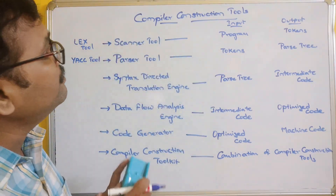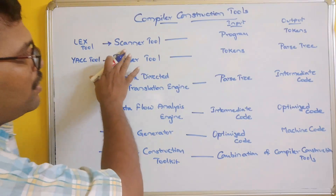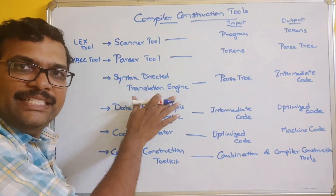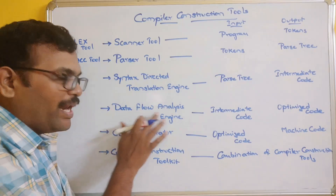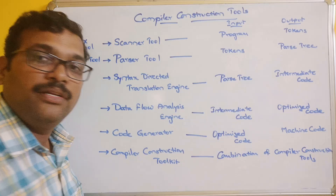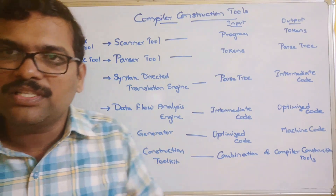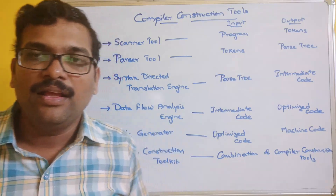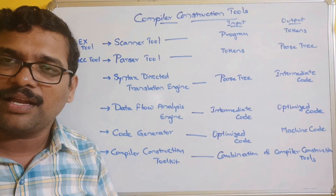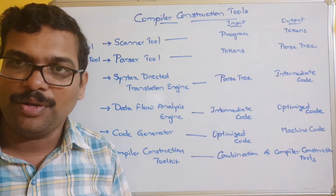So these are all the compiler construction tools: scanner tool, parser, syntax-directed translation engine, data flow analysis engine, code generator, and compiler construction toolkit. Hope you understood these compiler construction tools. If you enjoyed this session, please like, share with your friends, and don't forget to subscribe to our channel. Thanks for watching. Thank you very much.